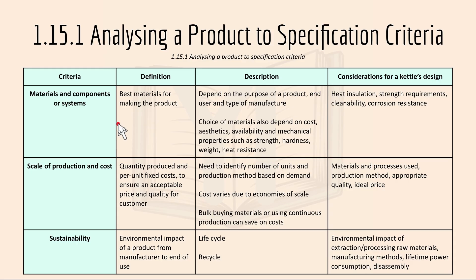Materials and components or systems refers to the best materials for making the product. It depends on the purpose of the product, the end user, and the type of manufacturer. The choice of materials also depends on cost, aesthetics, availability, and mechanical properties such as strength, hardness, weight, and heat resistance. For a kettle, it could be heat insulation, strength requirements, cleanability, and corrosion resistance.